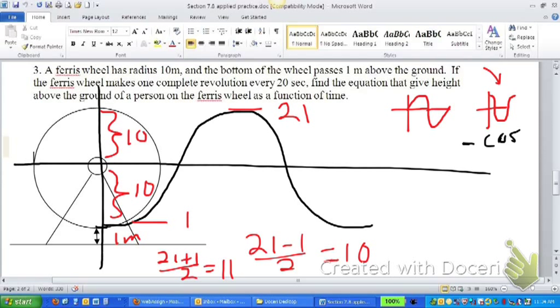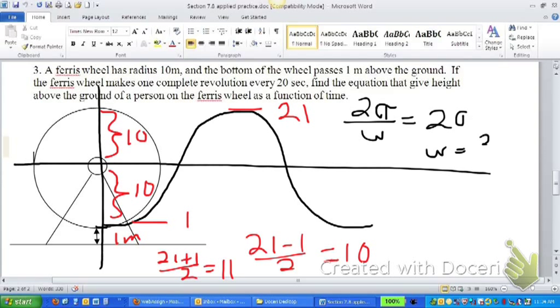The last thing we need to know is how does our period factor into our equation? And we do that by saying, since we're talking about a cosine function, our period is 2 pi, and we want the w from our equation, from our general equation. So we say 2 pi over w equals our period, which we're told is 20 seconds. And so when we solve for w, we'll end up getting w equals 2 pi over 20, which means w equals pi over 10.